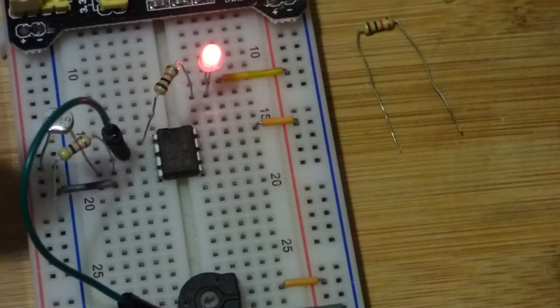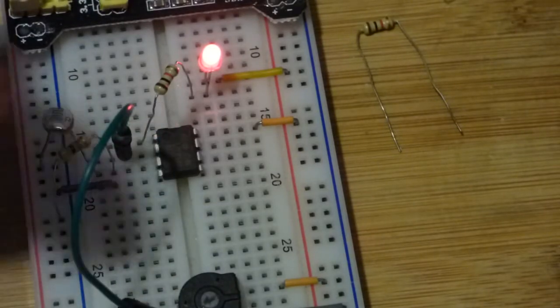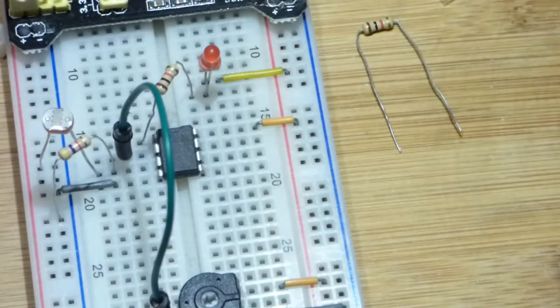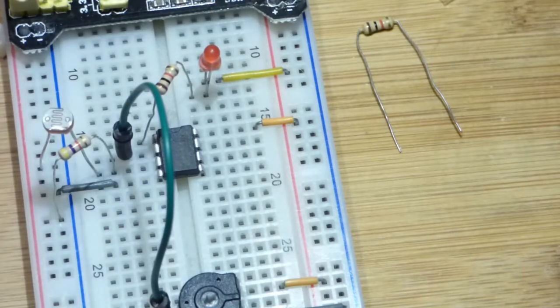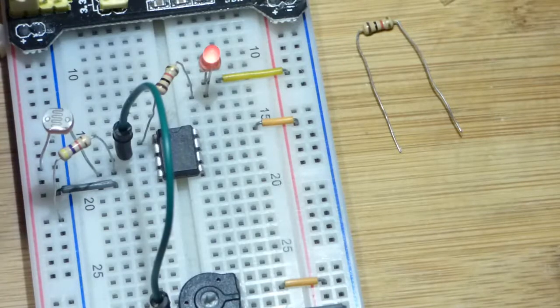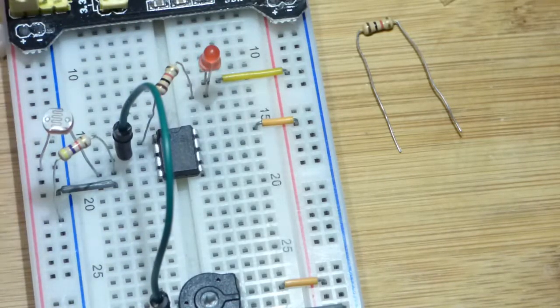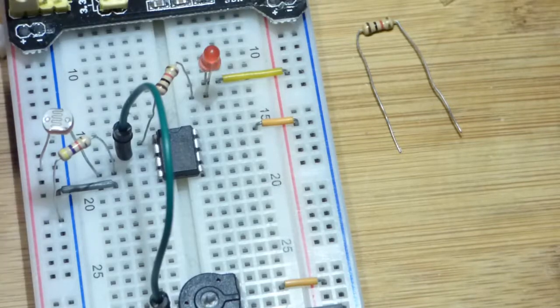Now when I turn, let's not block the light-dependent resistor, but I turn the light to its lowest setting. Now it turned off, and that's actually a little more sensitive than I want. But you can see here that if I kind of block the light from the ceiling, then the LED comes on.